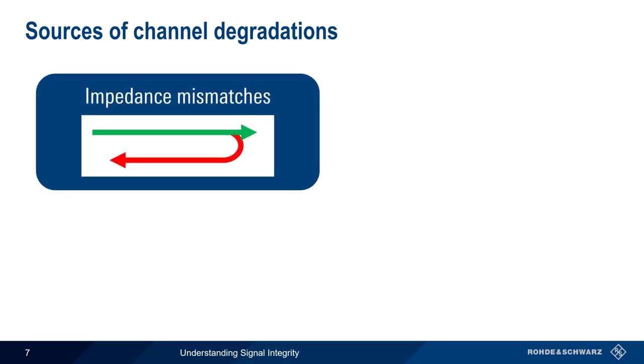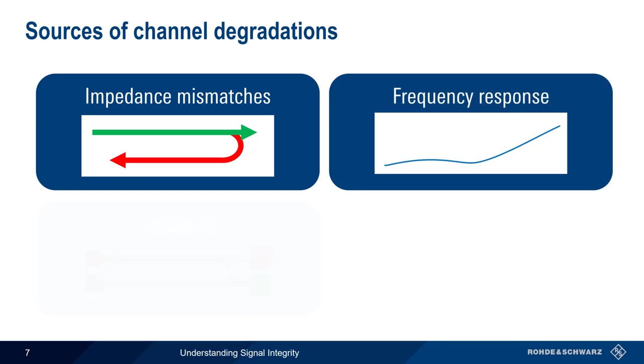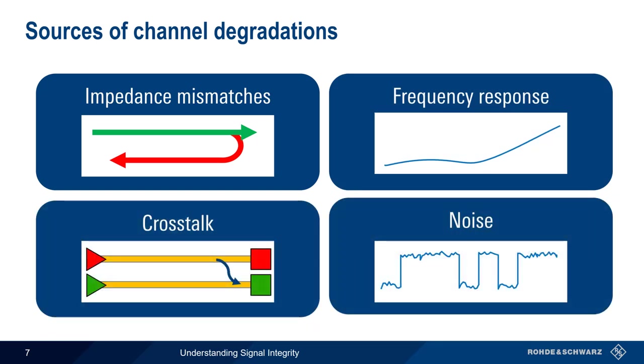In order to better understand signal integrity, we're going to take a look at four of the most common forms of channel degradation: impedance mismatches, frequency response, crosstalk, and noise. There are many other factors involved in signal integrity, but these are among the most important for high-speed digital design.